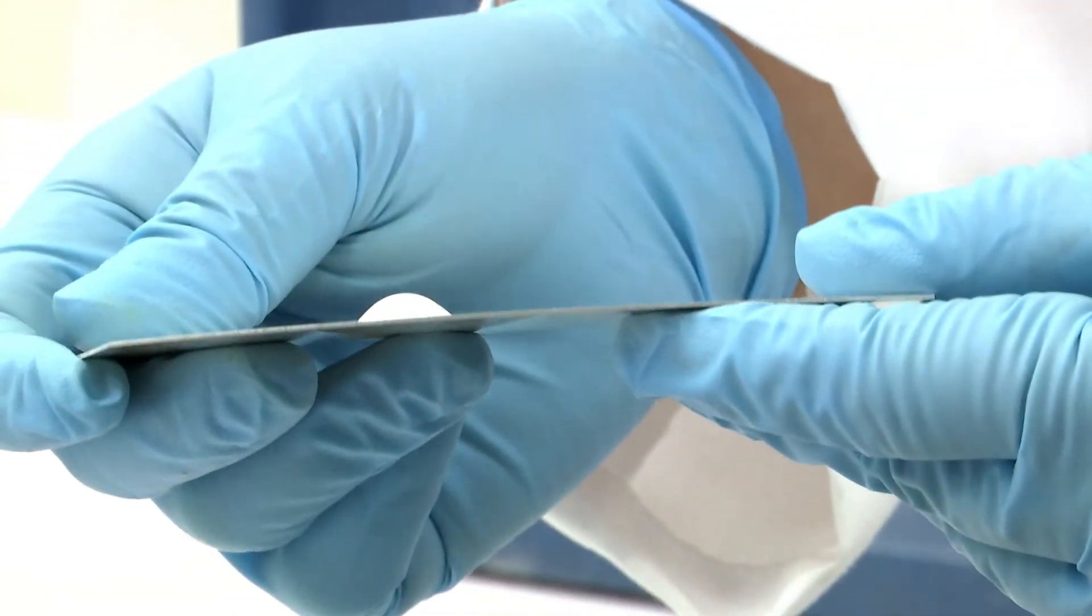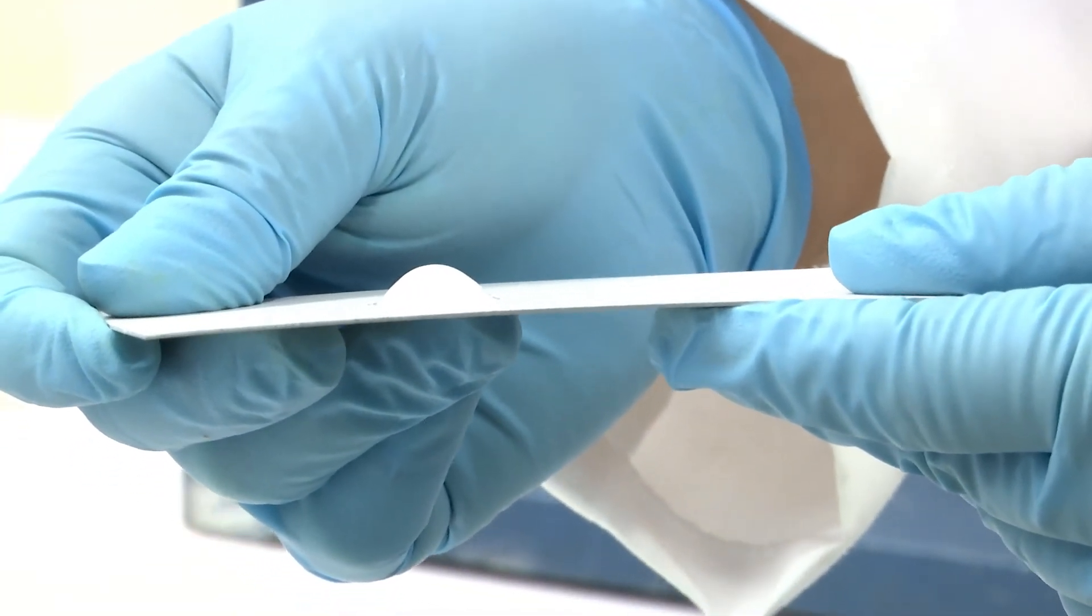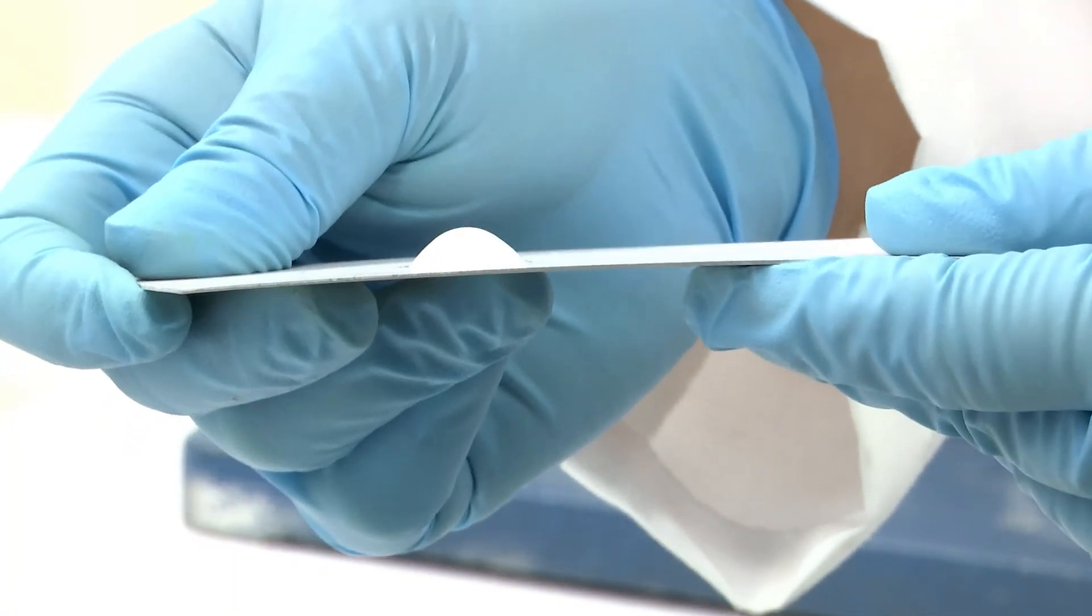As you can see from this, the deformation is much greater than the actual thickness of the metal with no failure of the Tedlar.